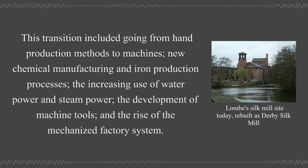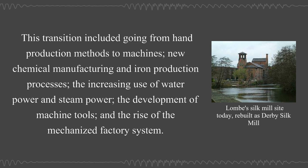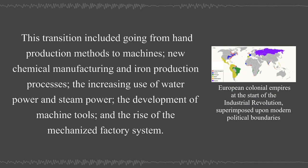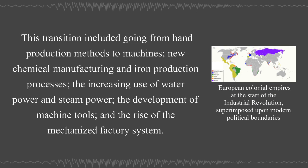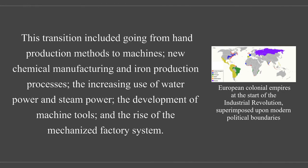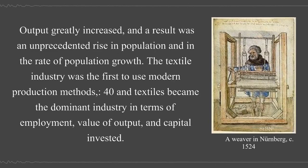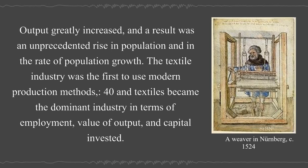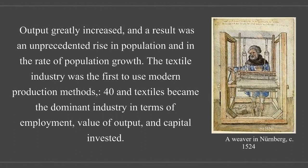This transition included going from hand production methods to machines, new chemical manufacturing and iron production processes, the increasing use of water power and steam power, the development of machine tools, and the rise of the mechanized factory system. Output greatly increased and a result was an unprecedented rise in population and in the rate of population growth.